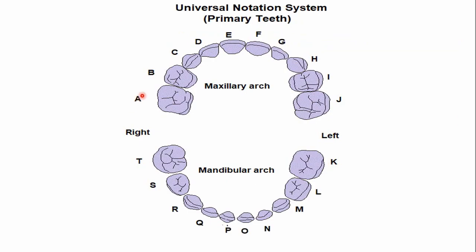In the Universal Numbering System, the alphabets begin with the right maxillary second molar and continue in a clockwise direction. The alphabet used for the mandibular deciduous canine of the left side is M, and continuing clockwise, the alphabet used for the right mandibular canine is R.